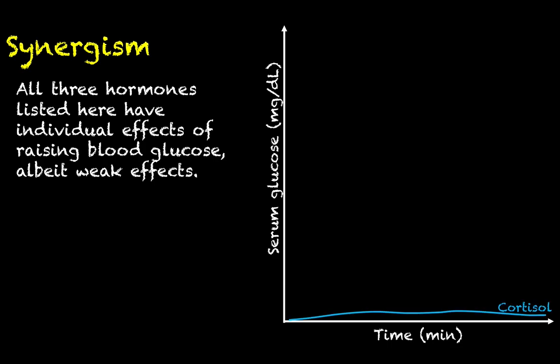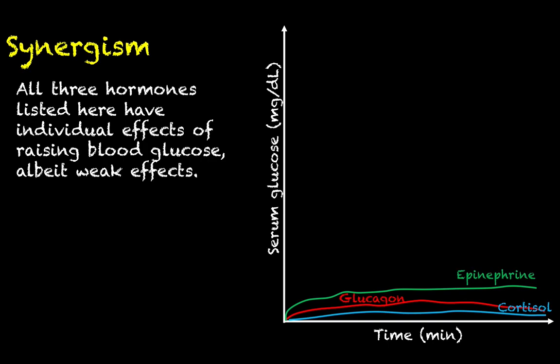Individually, these effects are rather weak. Starting with cortisol: if we inject cortisol at time zero, you can see blood glucose comes up just a little bit, but it's nothing to write home about. Same goes for glucagon — injecting glucagon will cause blood glucose to go up a little bit, but again it's nothing too terribly impressive. Same goes for epinephrine.